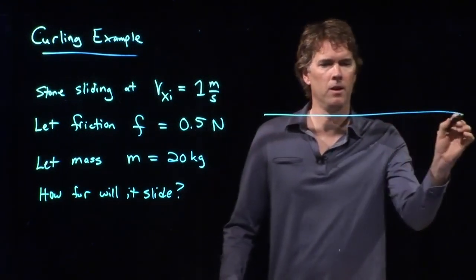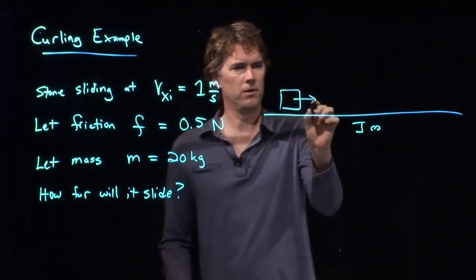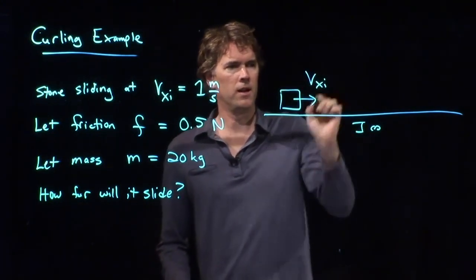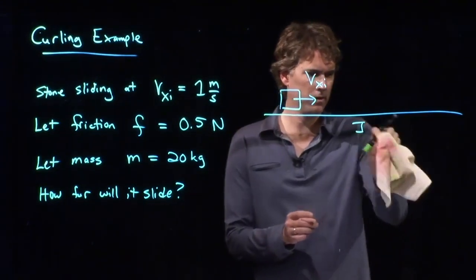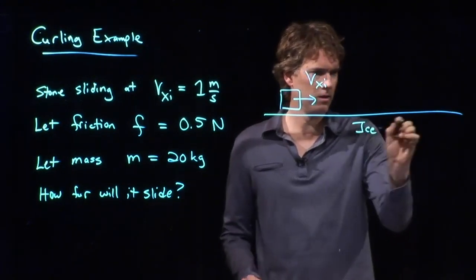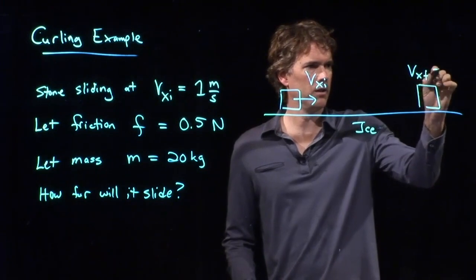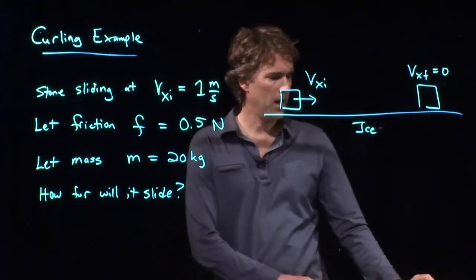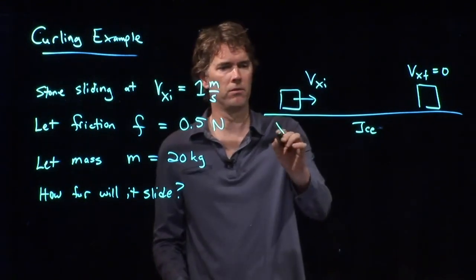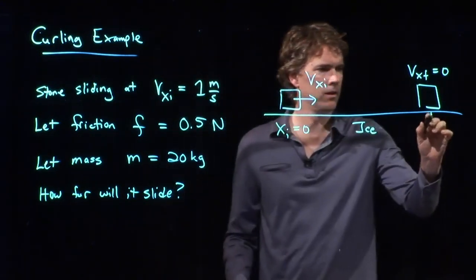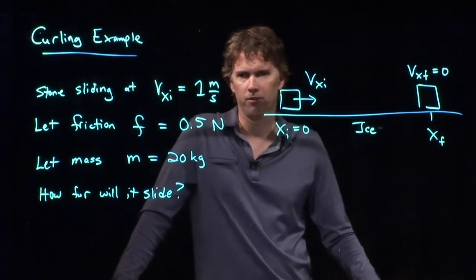Let's say it doesn't bump into anything, it just slides along the ice. How far is it going to go? Well, let's draw a picture. Here's our ice, we have our stone, heading along at VXi, eventually it's going to come to rest over here somewhere. VX final is equal to zero, and we want to figure out how far that is. So let's start our tape measure right there, and let's figure out X final.